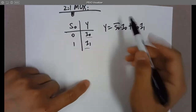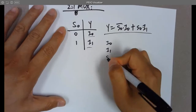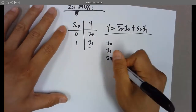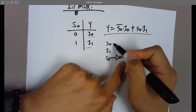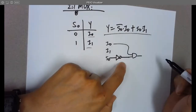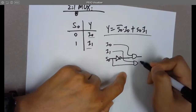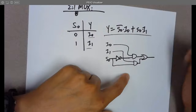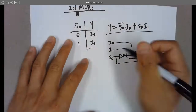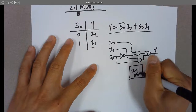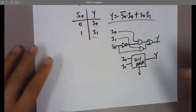The logic function is: Y = (S0_bar · I0) + (S0 · I1). From this we build the circuit: invert S0 to get S0_bar, AND that with I0 for the first term; AND S0 with I1 for the second term; then OR both together to get Y. That's the complete 2-to-1 MUX combinational logic circuit.